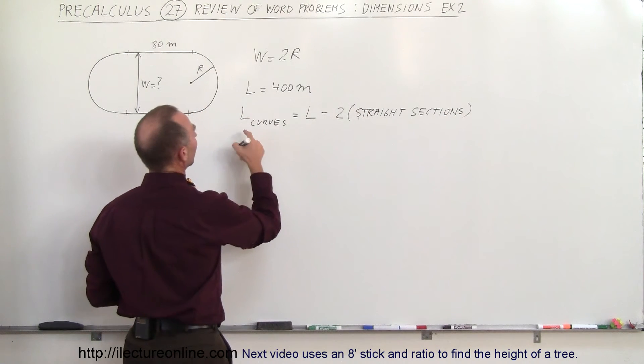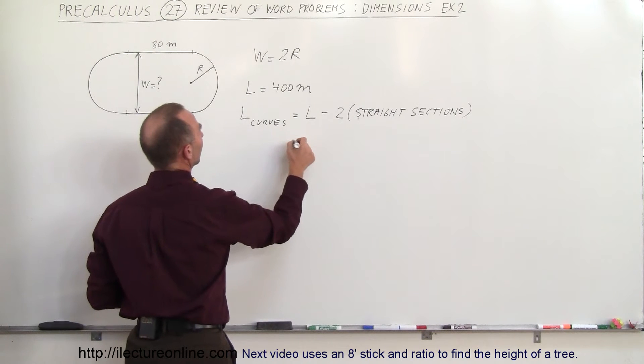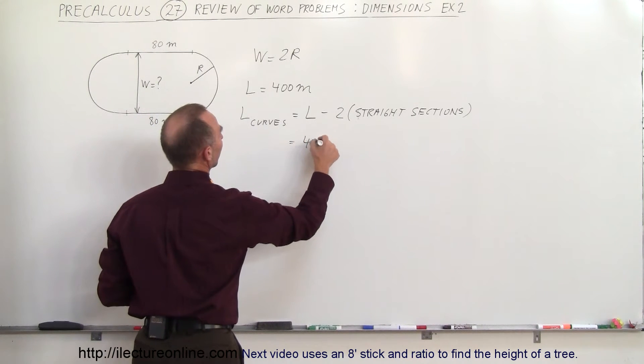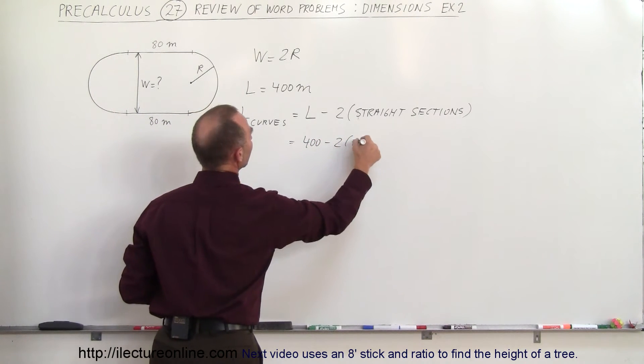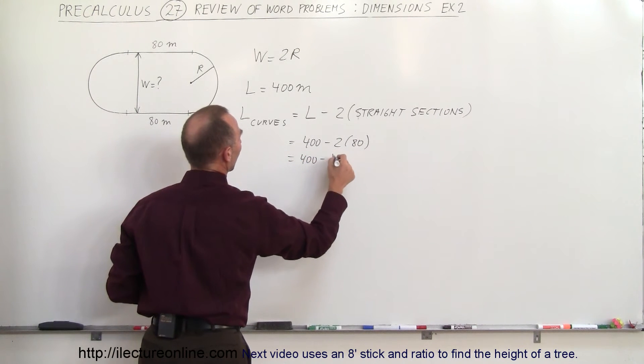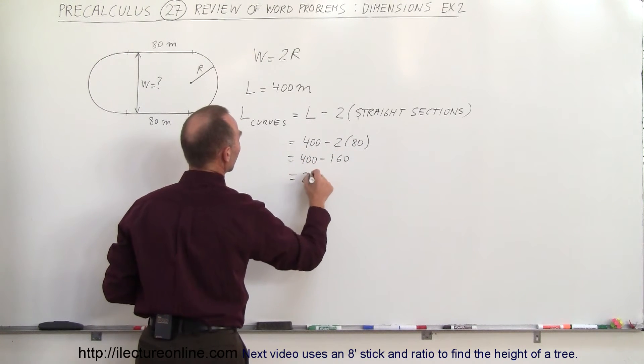That means the length of the curves is equal to the total length, which is 400 minus 2 times 80, which equals 400 minus 160, which equals 240.